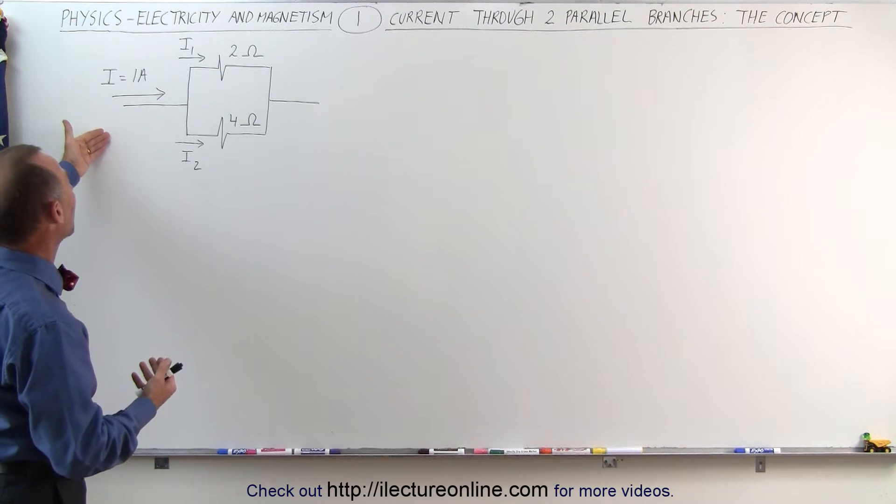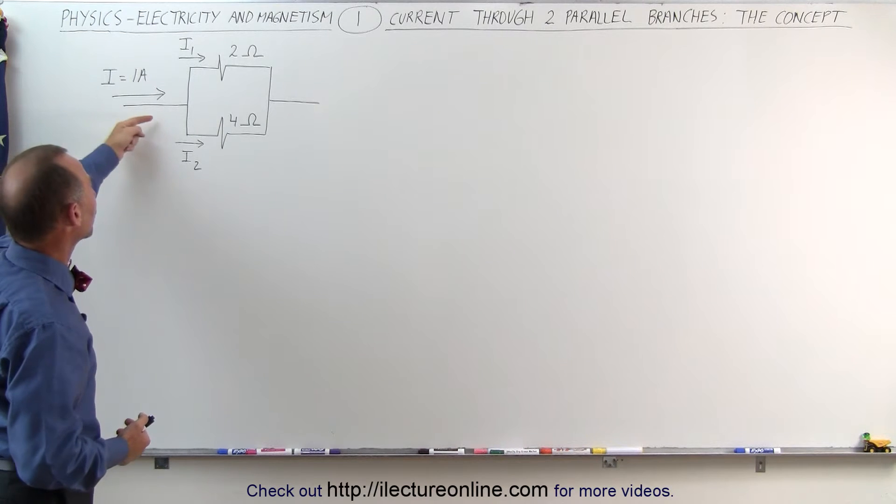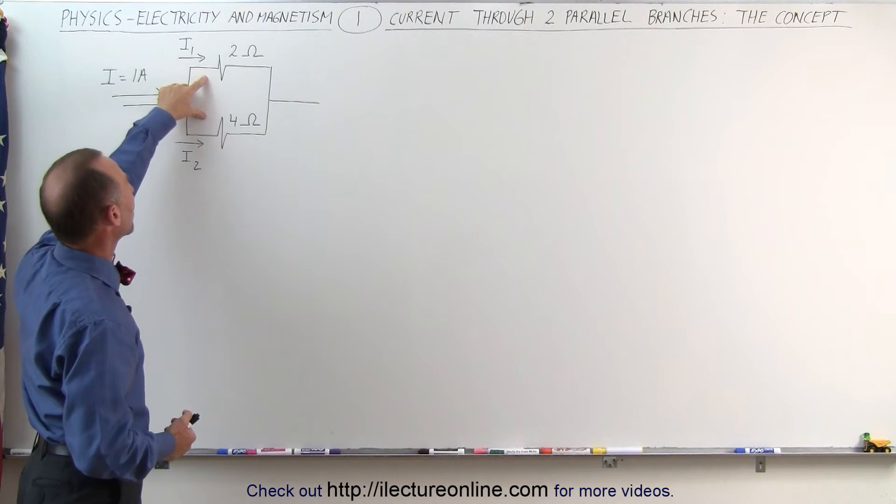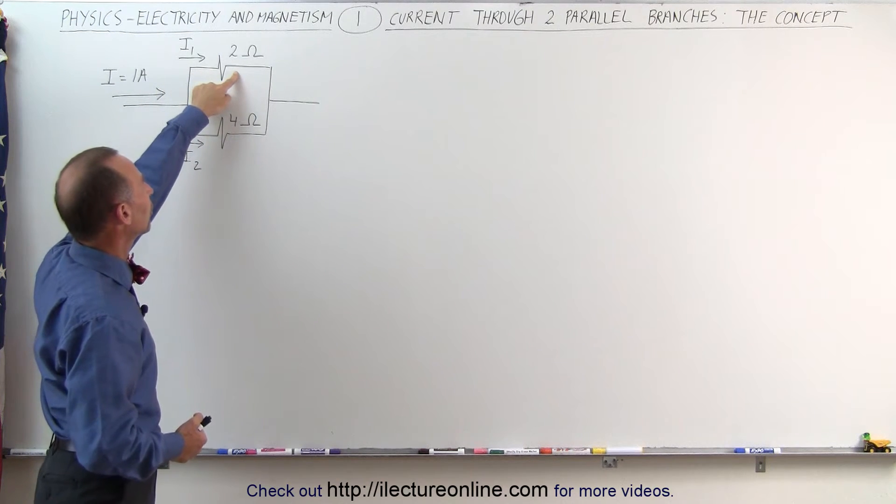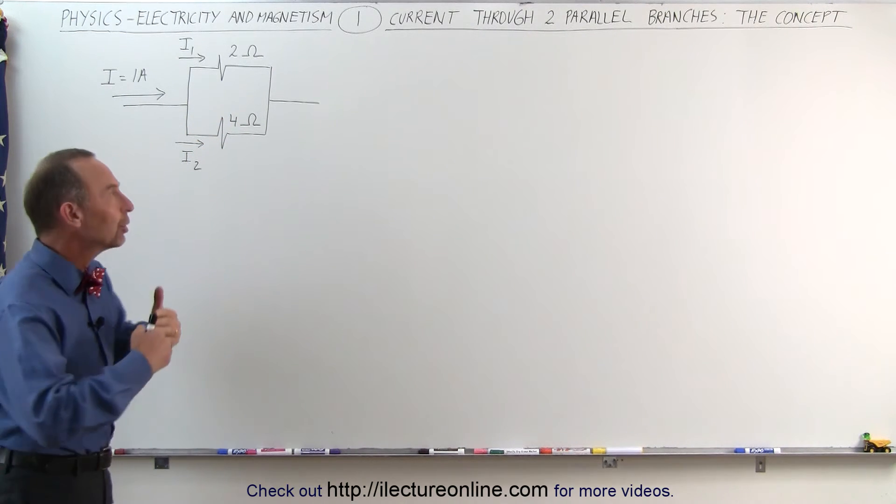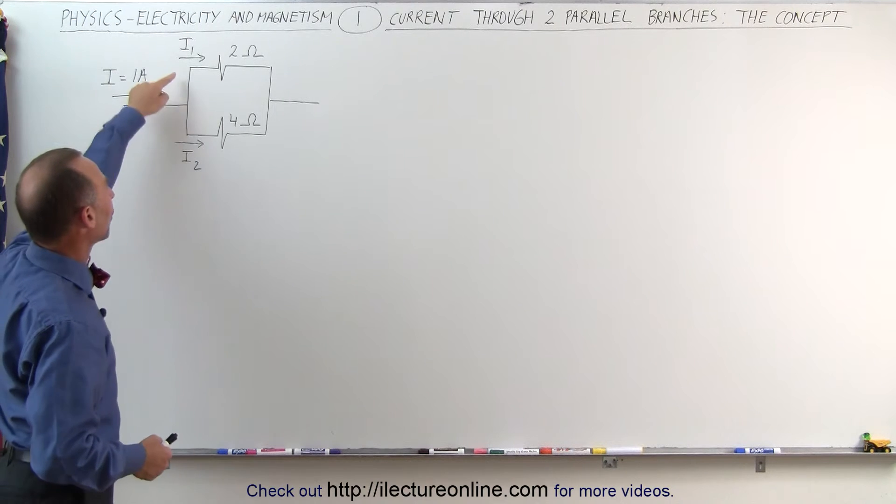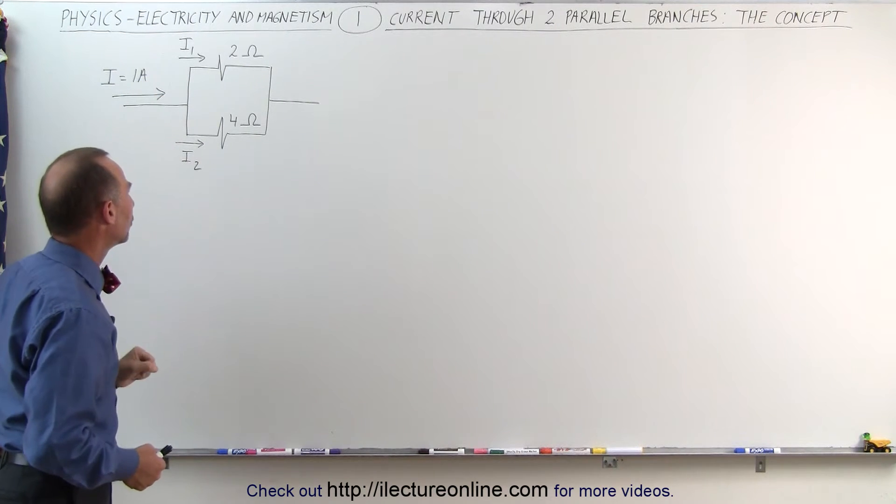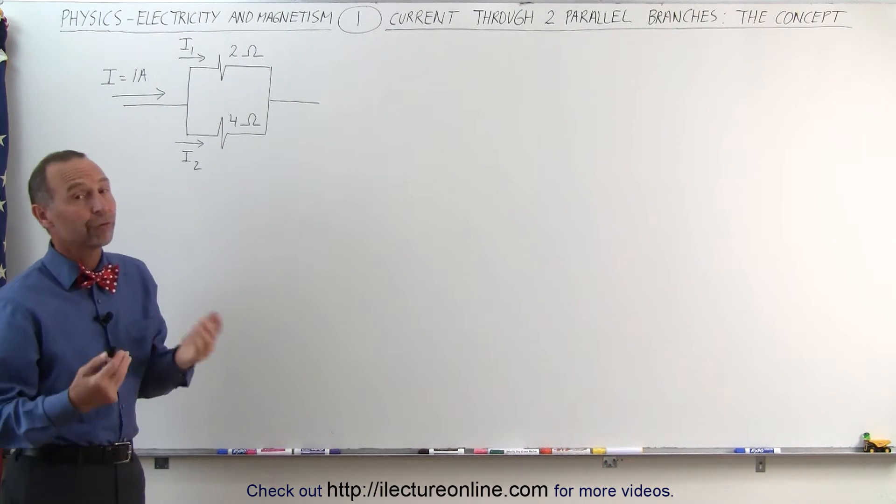First of all, let's do the conceptual part here. We have one amp current coming up to a junction. There's two branches. There's a two ohm resistor in the one branch and a four ohm resistor in the other branch. How do we determine the current in each of the branches? I1 through the top branch and I2 through the bottom branch. Well, first of all,